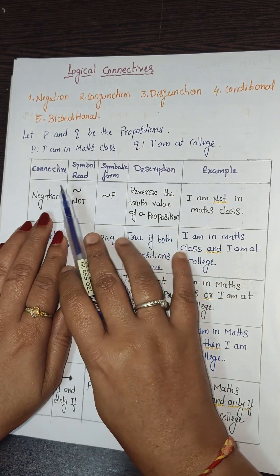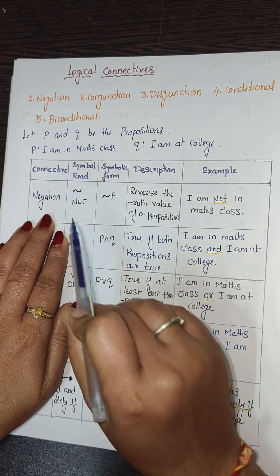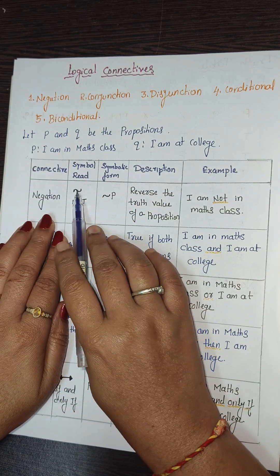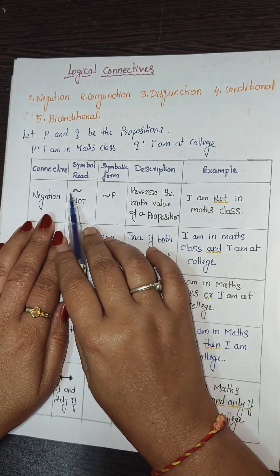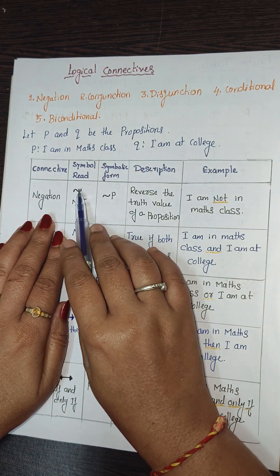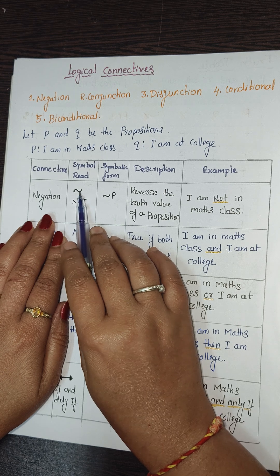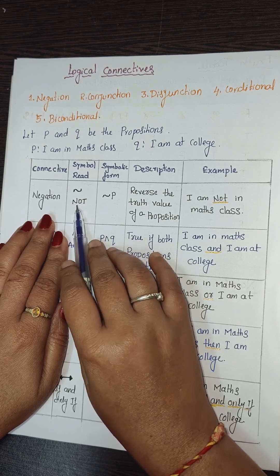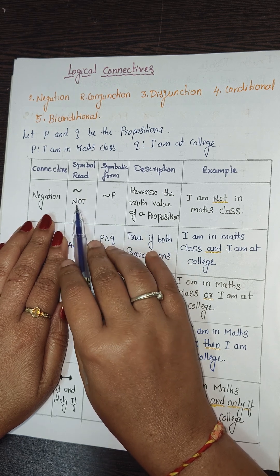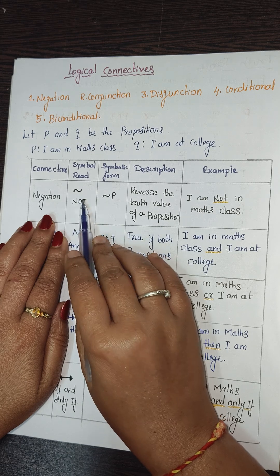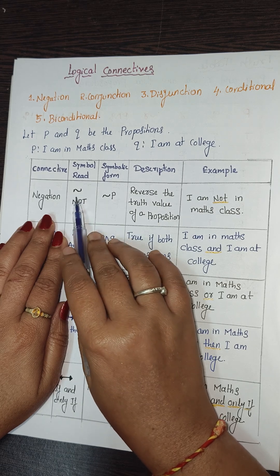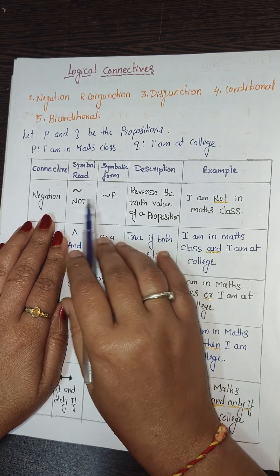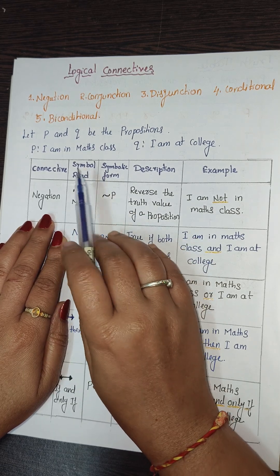The first connective is negation. Its symbol is the negation sign (¬), and it is read as 'not.' In symbolic form it is written as ¬p.